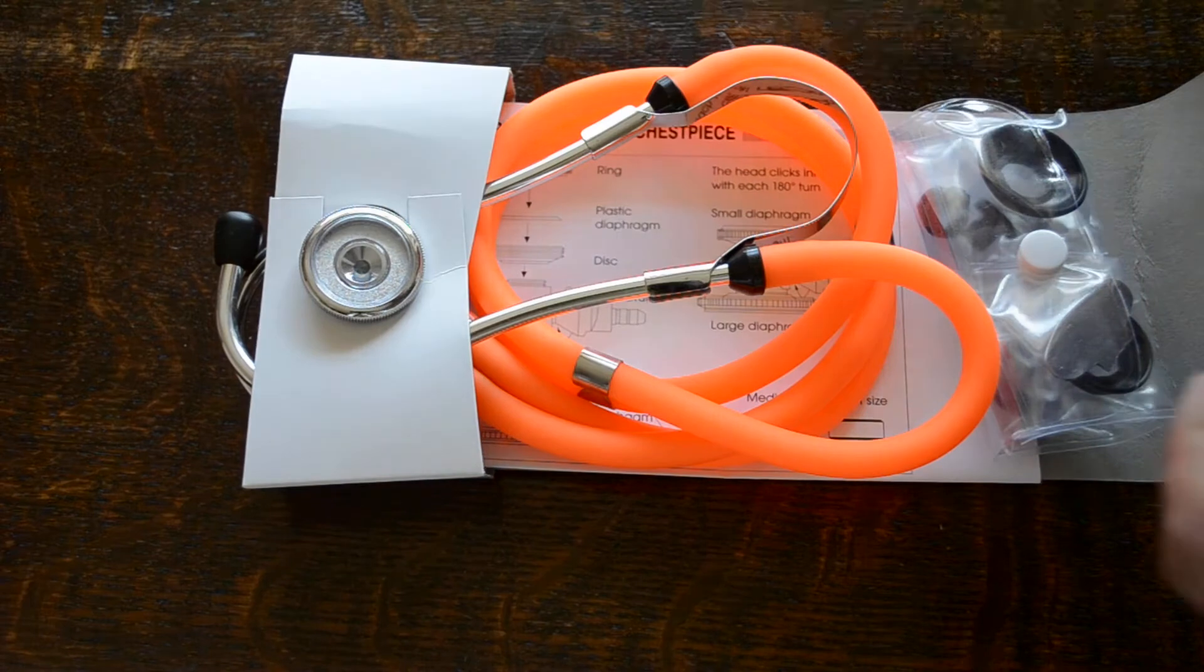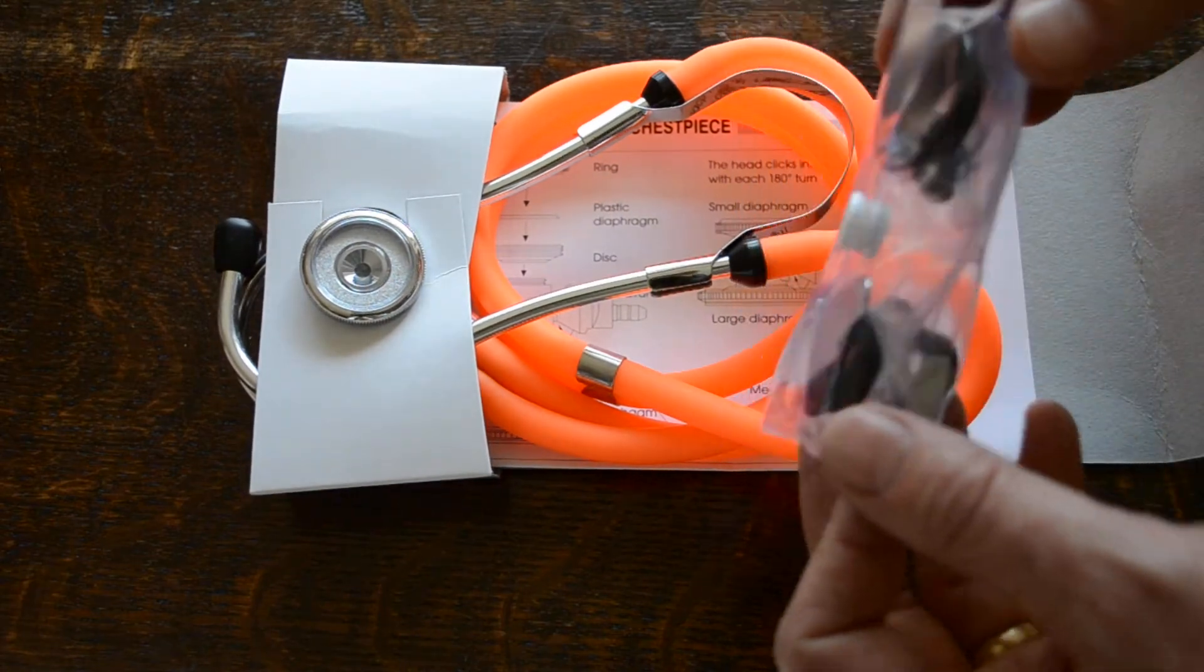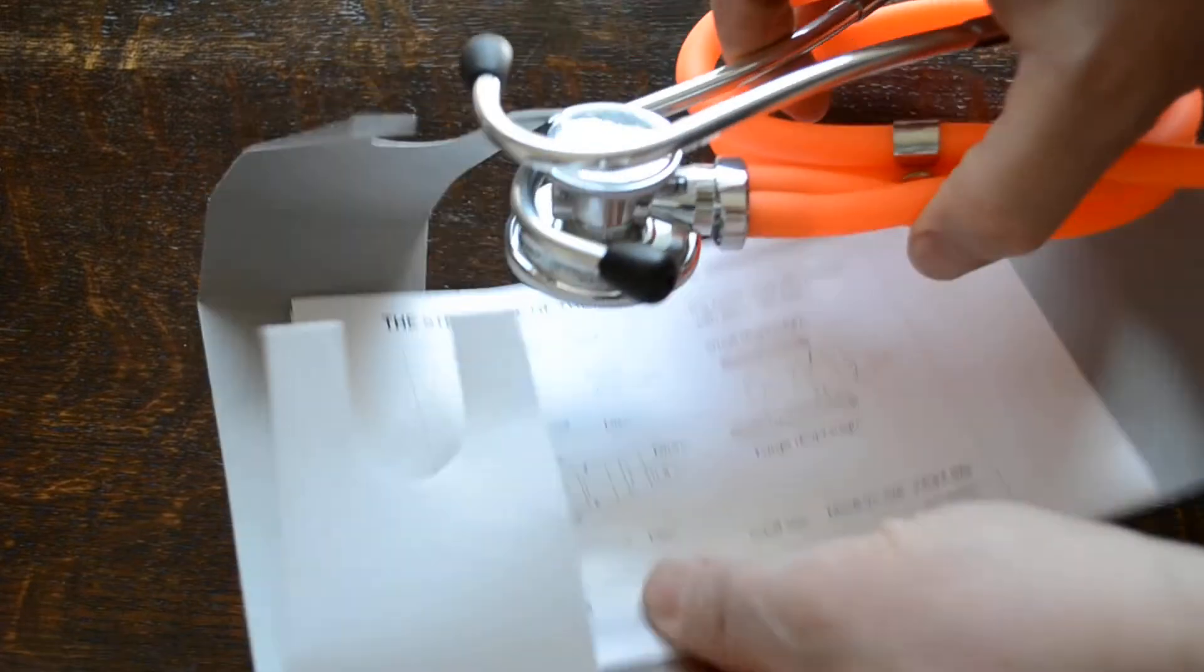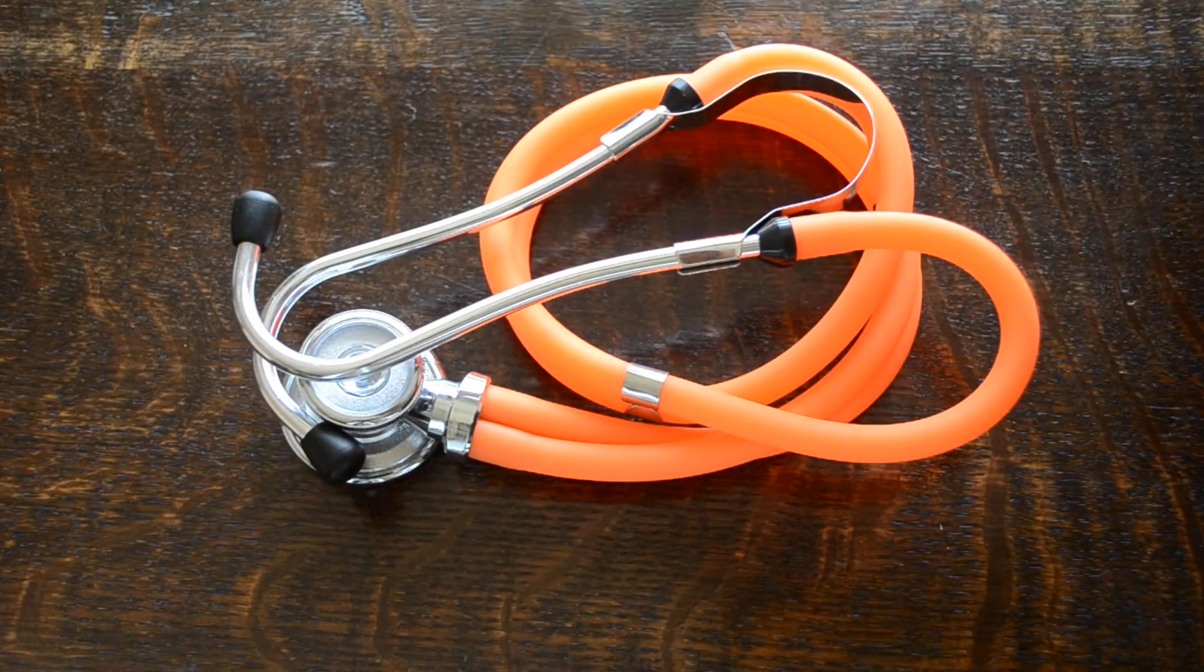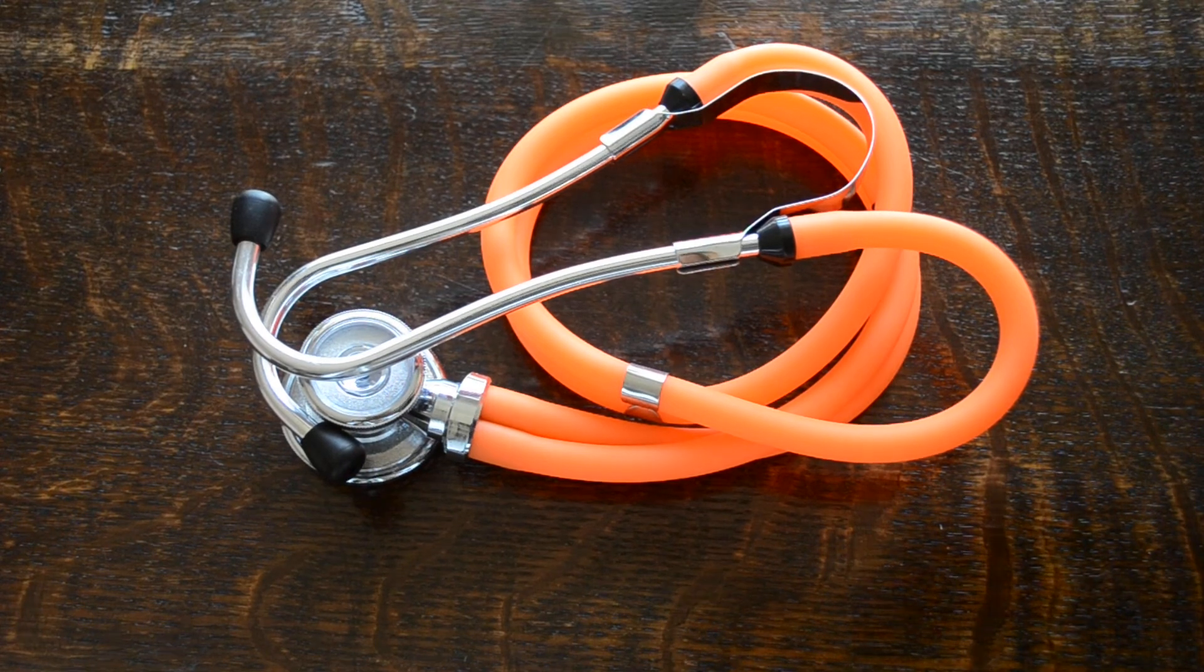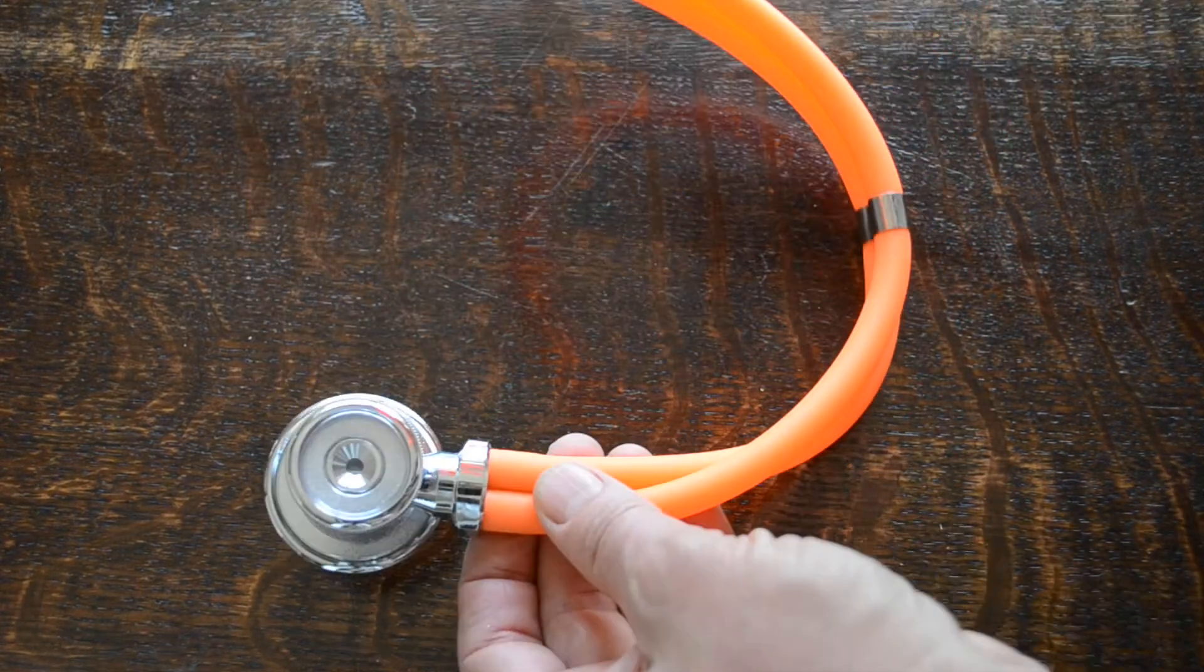Let's just open this up and show you what you get. Pack of spare parts which we'll come to in a minute. Just take this out of the outer. Retain the pack insert. We'll come to that again in a minute. Let me just show you the stethoscope first off.